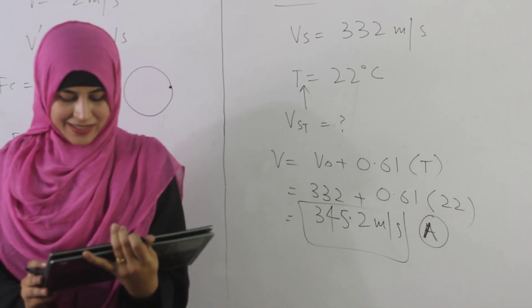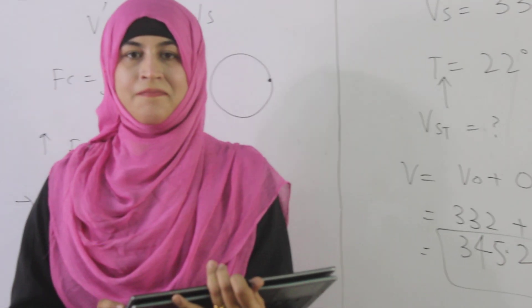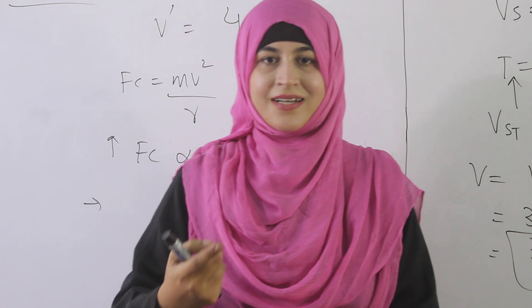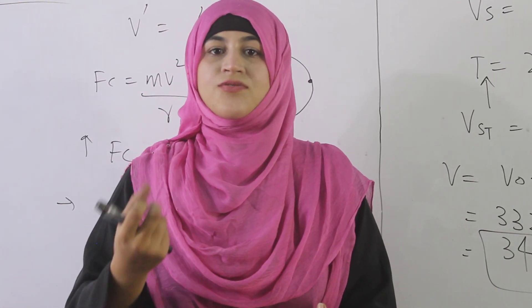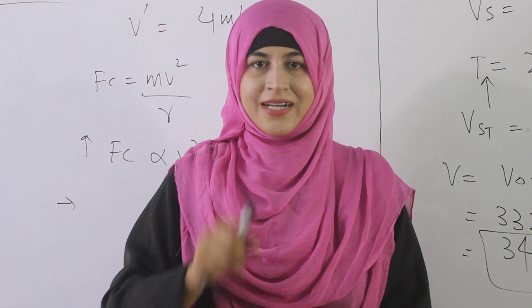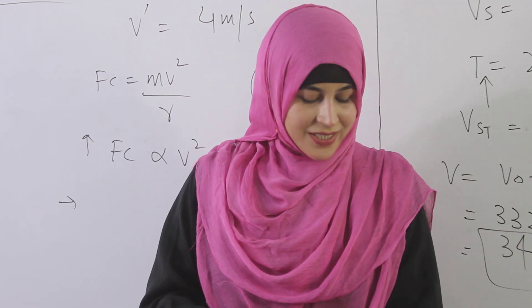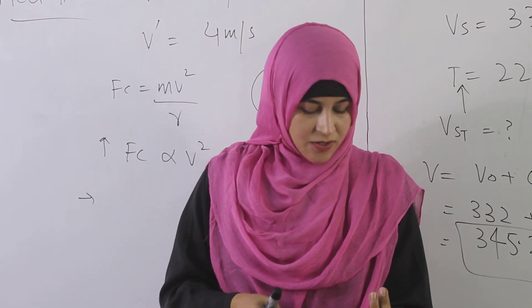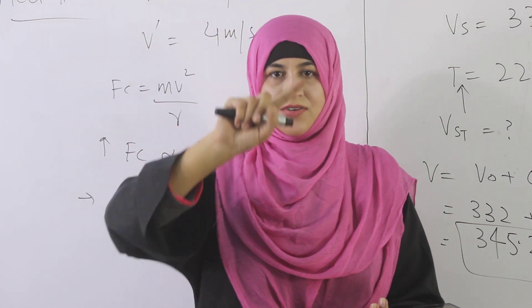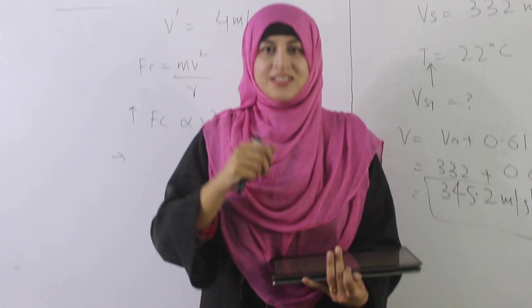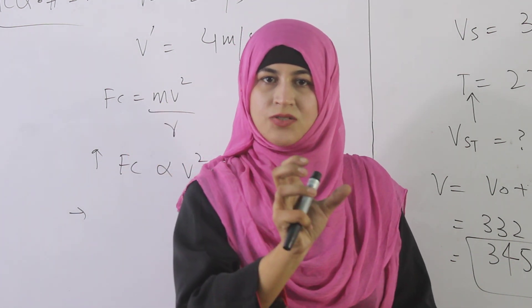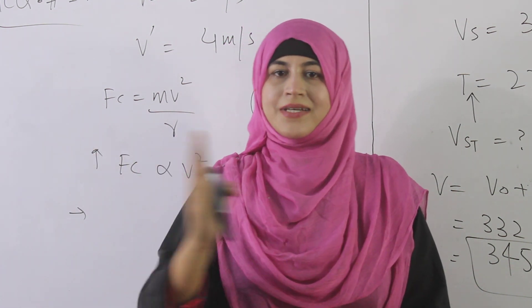MCQ number five: Astronomers calculate the speed of distant stars and galaxies using which of the following phenomena? The question asks what concept astronomers use to calculate the speed of stars and galaxies. Option A is beats — the difference in frequencies. Option B is interference. Option C is superposition principle. Option D is the Doppler effect. When the distance between the source of sound and the observer increases or decreases, the Doppler effect applies — so that is the answer.